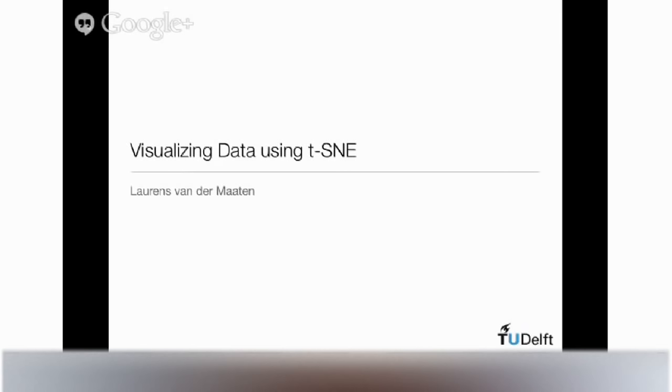I'd like to introduce Lawrence van der Maaten, who's our speaker today. He's going to talk about a new visualization technique that works better than any other technique for laying out large data sets in 2D maps so you can see the structure of them. Lawrence got his PhD in computer vision from Tilburg in 2009. He did a postdoc at UCSD with Lawrence Saul in machine learning, and he's now an assistant professor at Delft University of Technology. In 2008, he visited Toronto for six months where we worked together on developing T-SNE. I'm very proud of one of my contributions, which was to think outside the box and say it would work better if we made the probabilities of a set of mutually exclusive events add up to four. And Lawrence now tells me it works better if we make them add up to 12.